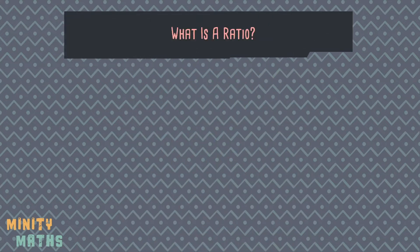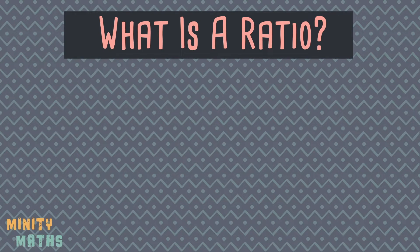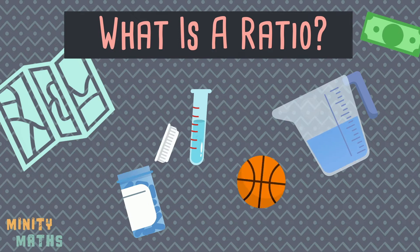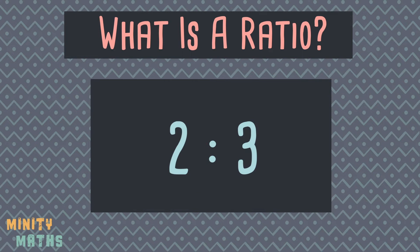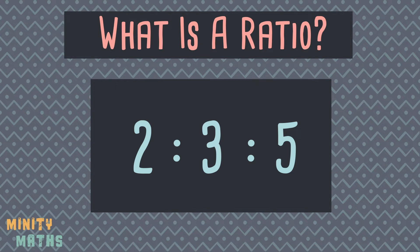So what is a ratio? Ratios are used to show how amounts of something compared to each other. Ratios are used frequently in everyday life. Ratios are written like this and can also contain more than two numbers. We read the colon as to, for example, 2 to 3 to 5.